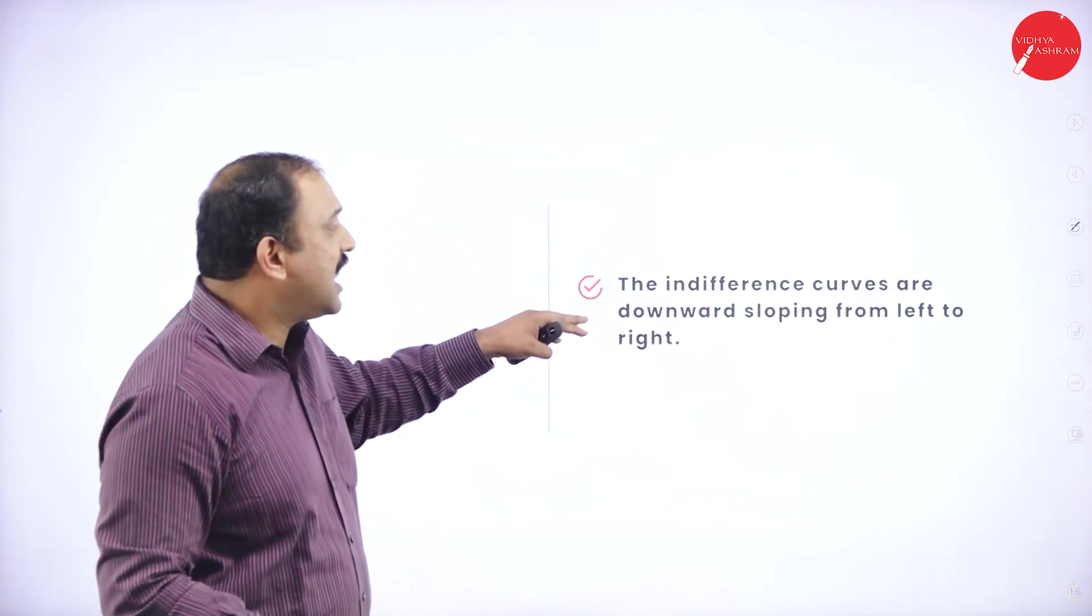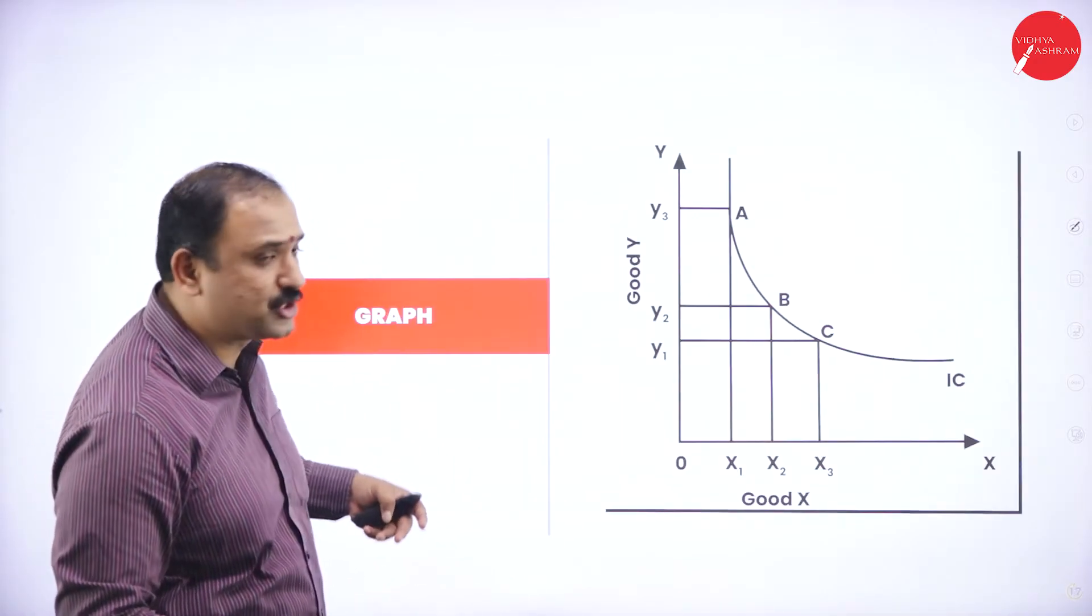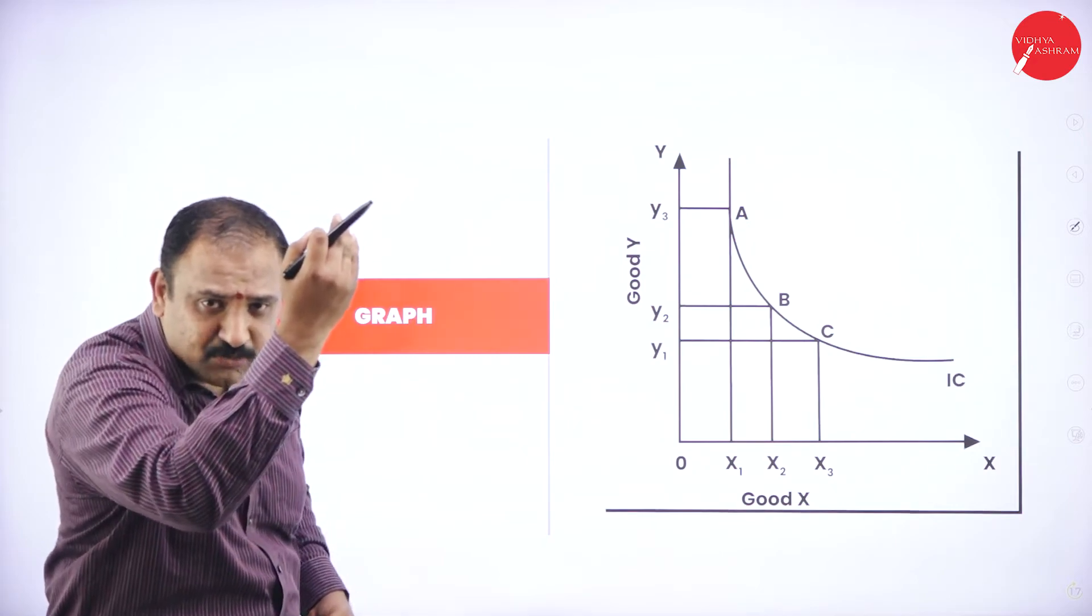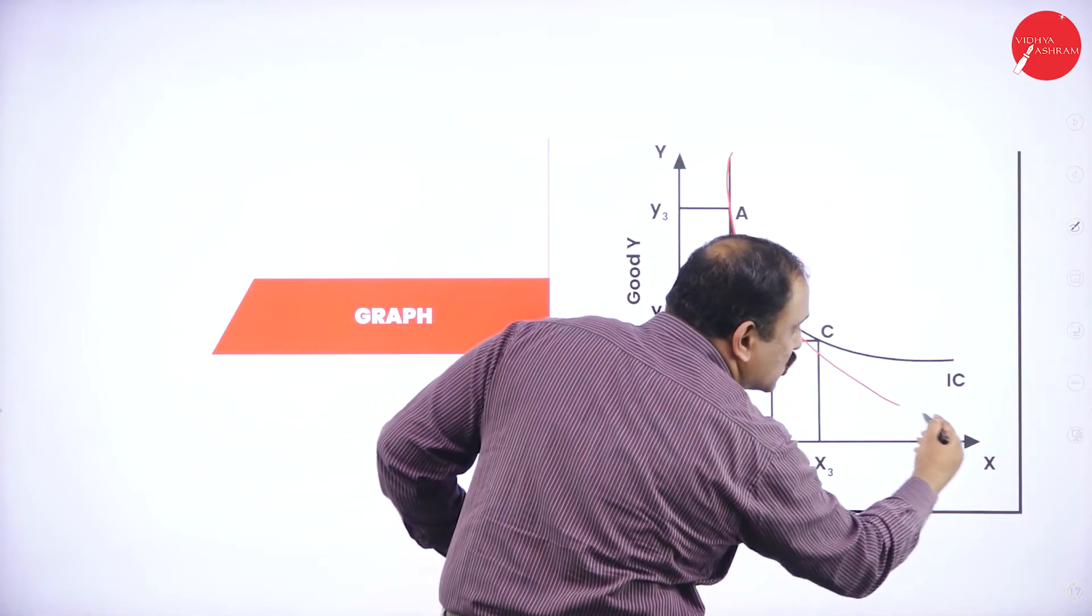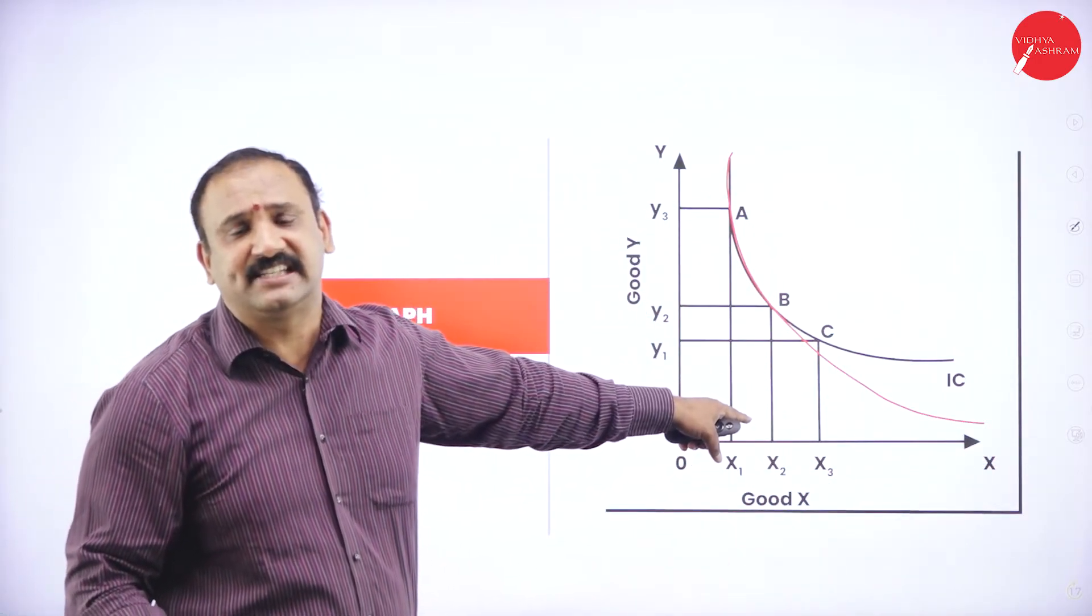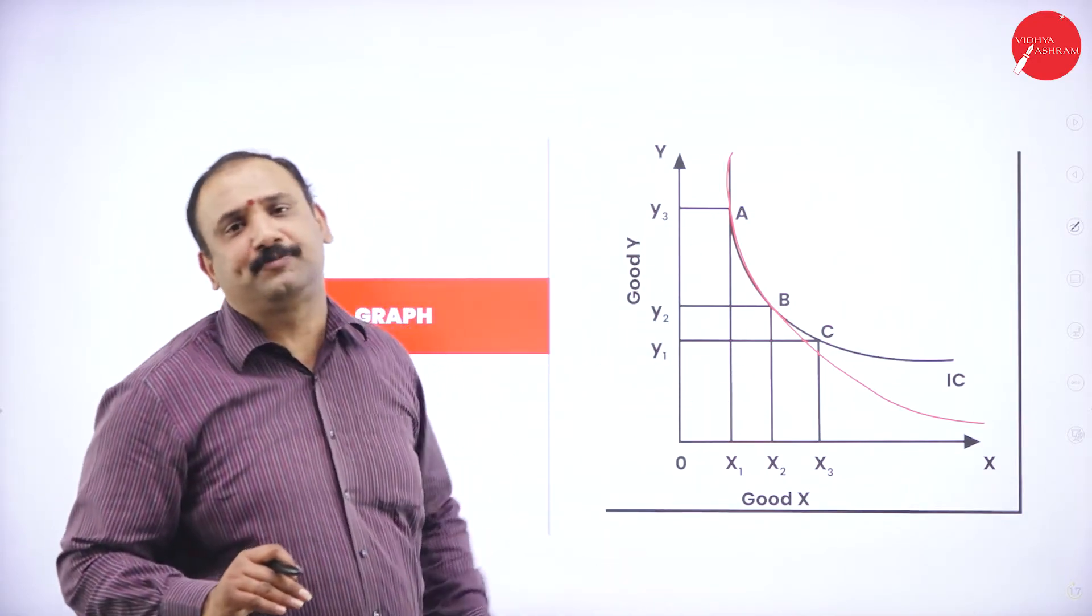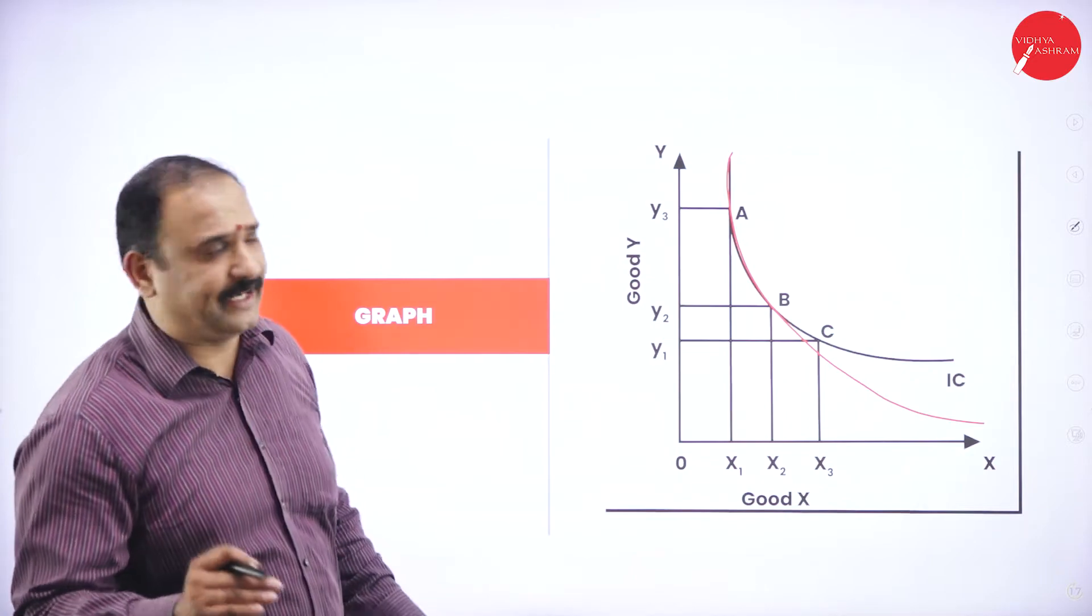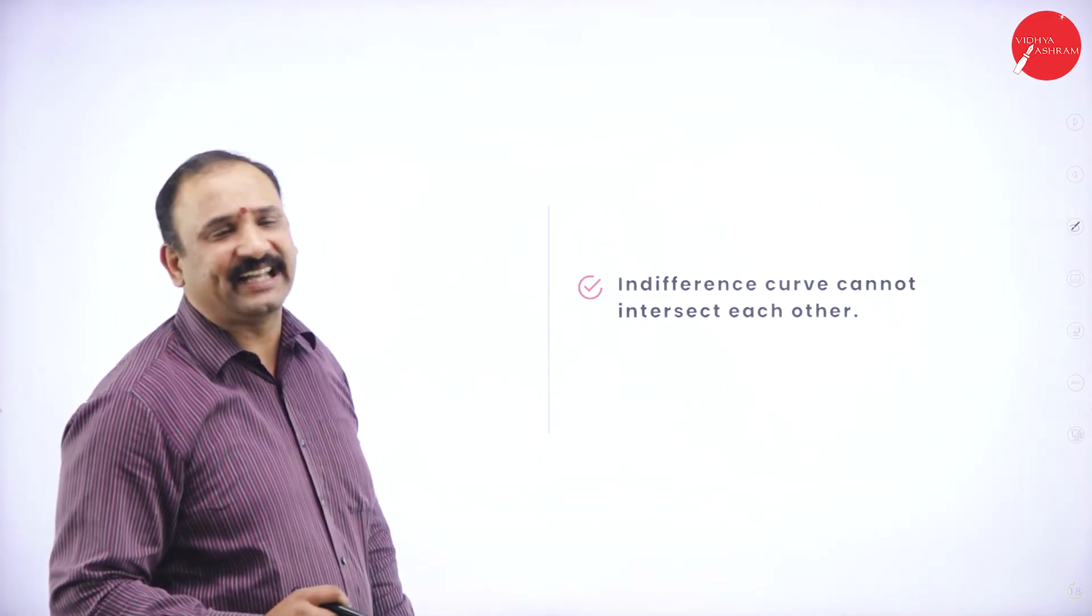The next one: indifference curves are downward sloping from left to right. Why they are downward sloping? Because the factors will start from a peak and then it will start coming downwards. Definitely it will start sloping downwards like this but it will not touch the axis, the x-axis, not become complete zero.